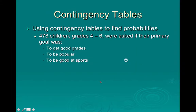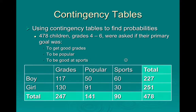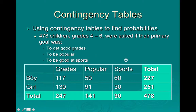To make conditional probability easier, we often use contingency tables. Using contingency tables to find probabilities makes conditional probability a lot easier. The example we're going to use is that there were 478 children in grades 4 through 6, and they were asked what their primary goal was — whether it was to get good grades, to be popular, or to be good at sports. This contingency table has two variables: gender and goal. The inside values are your conditional distributions, and the totals on the margins are your marginal distributions.